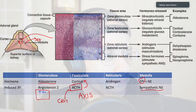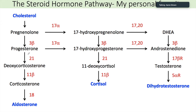Without any further ado, let's get right into the lesson. So — the steroid hormone pathway, another one of the most feared pathways. This one's not so bad. What I want you to see big picture here is that the starting block for everything released by the adrenal cortex is cholesterol. Whether you're coming from the glomerulosa, fasciculata, or reticularis, it all comes from cholesterol.